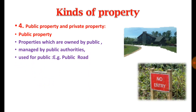Public properties are maintained and managed by public authorities, used for public purposes. Examples include educational institutions, government-run hospitals, roads, and public gardens. A person has only a limited right to enjoy such property and cannot dispose of, sell, or mortgage it. For example, nobody can transfer, sell, or mortgage the Taj Mahal, though a person can visit it subject to terms and conditions.